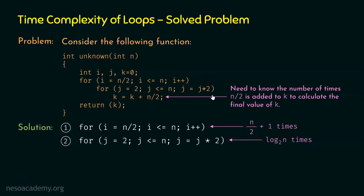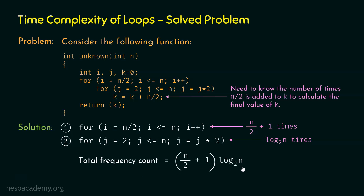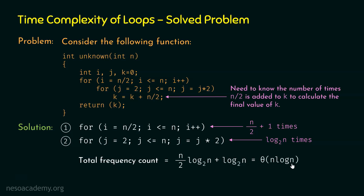Since this is an independent nested loop structure, we multiply the two frequency counts: (n/2 + 1) * log₂(n). Expanding and eliminating constants from the denominator and logarithm base, we get n log n + log n. The dominating term is n log n, so the time complexity is θ(n log n). Therefore the frequency count of these two for loops is n log n.